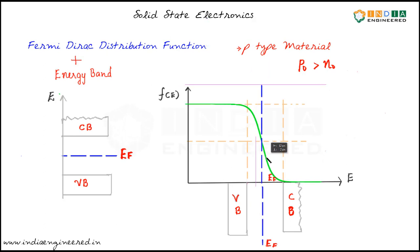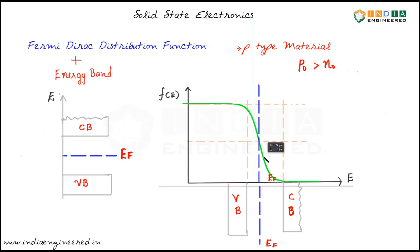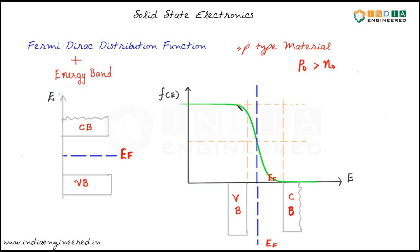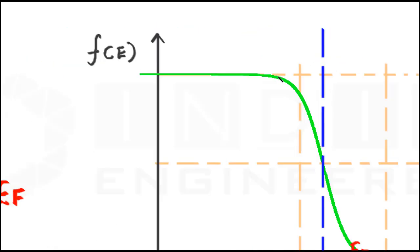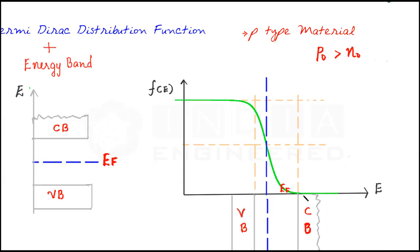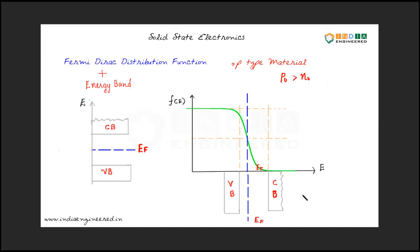As we move the Fermi level closer and closer to the valence band, we can see that the probability of finding holes in the valence band increases. If we move the Fermi level further closer to the valence band, this probability of finding holes keeps increasing. Similarly, the probability of finding electrons in the conduction band decreases.